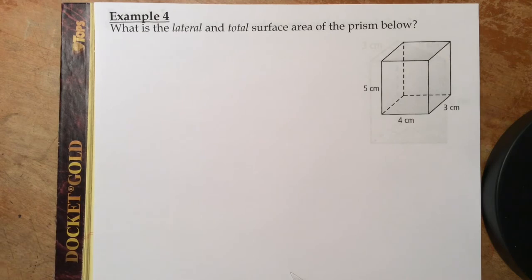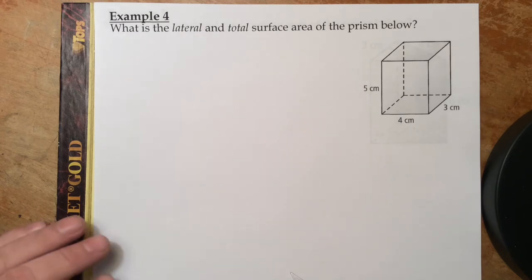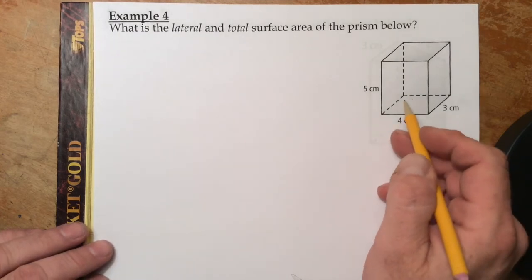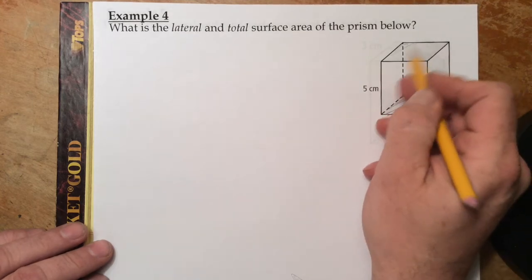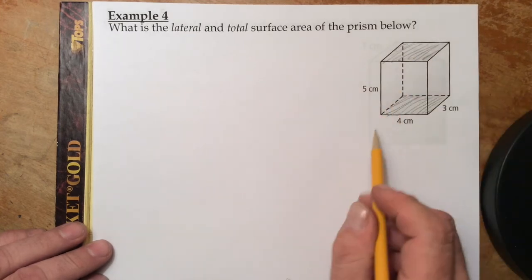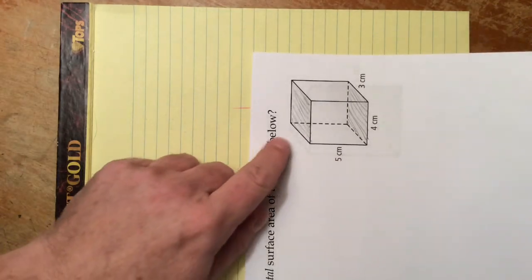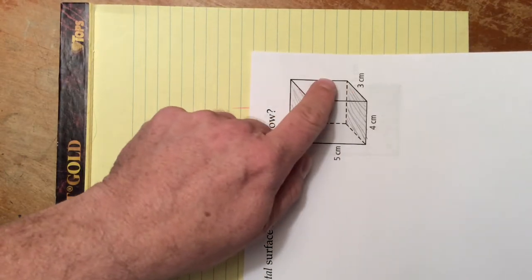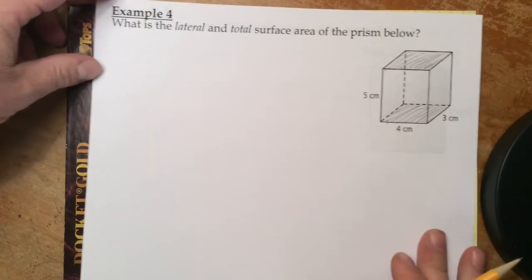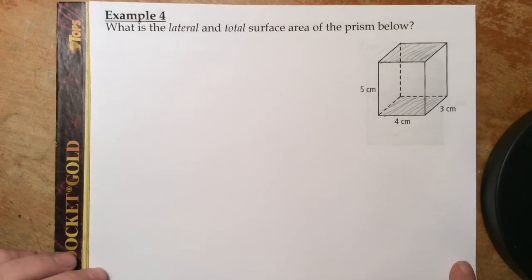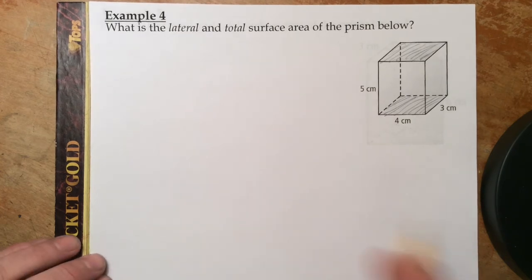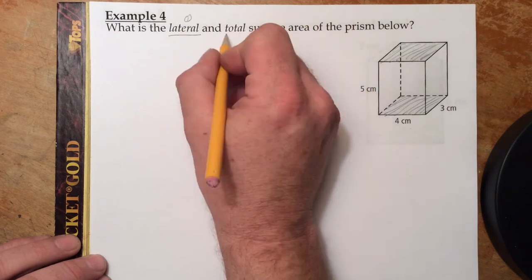Now for some measurement. Example 4: what is the lateral and total surface area of the prism below? One thing about rectangular or square prisms is that we have to designate the base. We're used to seeing bases at the bottom, so we'll state that this is our base — prisms have two bases, the other being parallel on the opposite side. We could have chosen different faces as the bases. We're going to start with the lateral area first, then go to the total surface area.